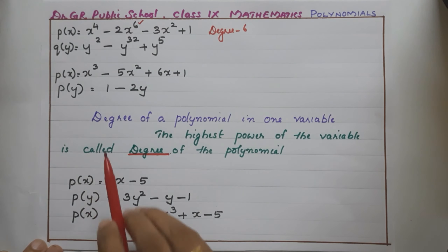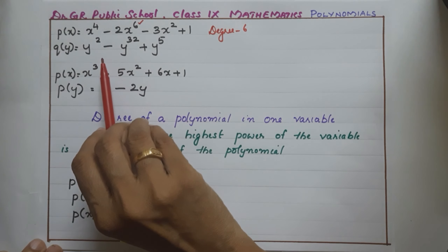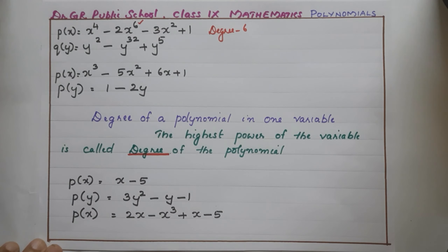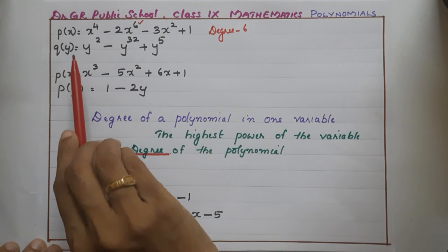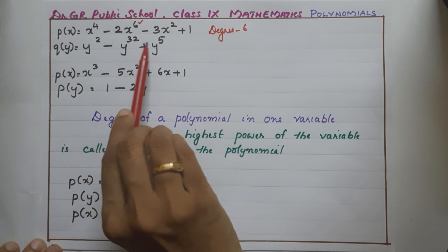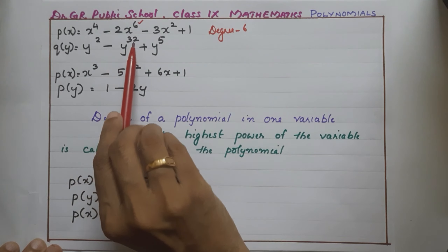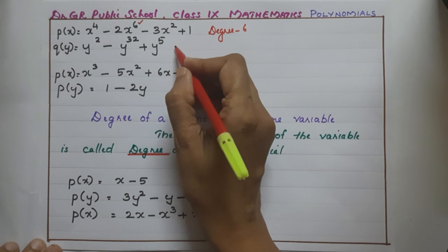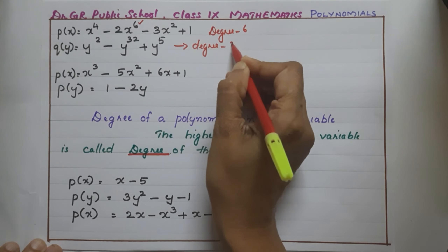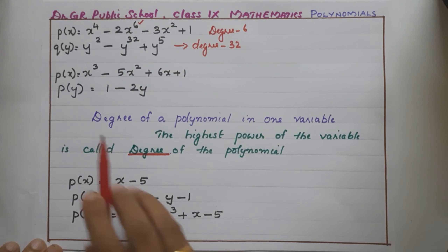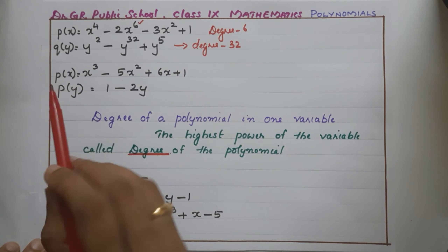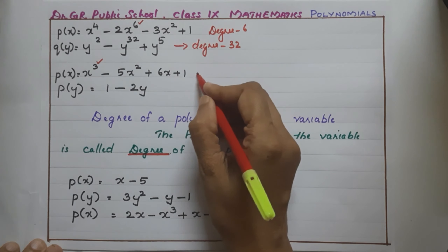Now come to the second polynomial. This is also a polynomial in one variable. We are discussing only polynomials in one variable. The powers are here 2, here 32, here 5. So 32 is the highest one, and the degree of this polynomial is 32. And here, 3 is the highest one, so the degree is 3.